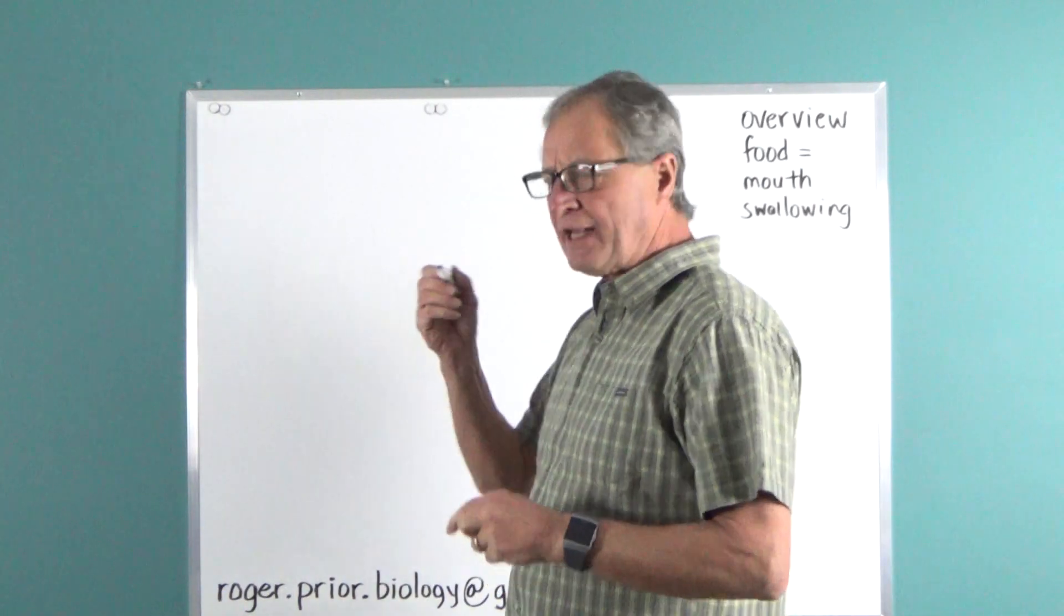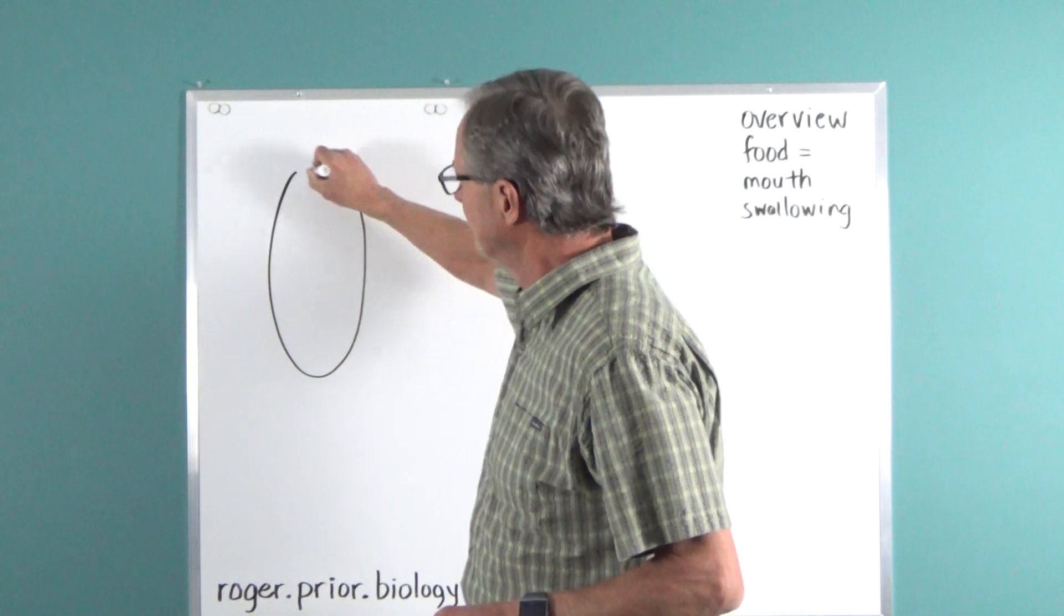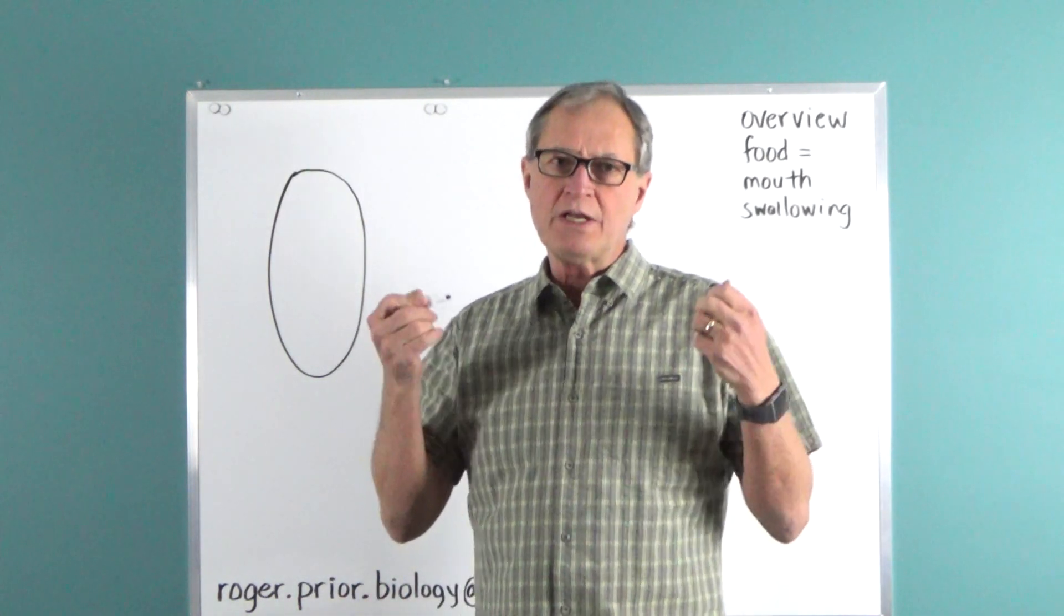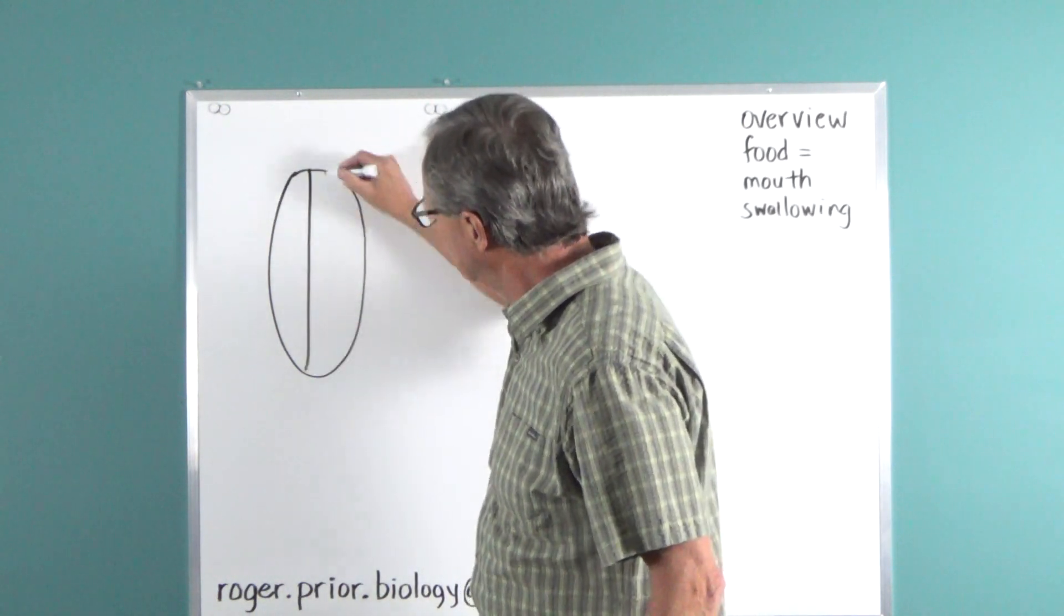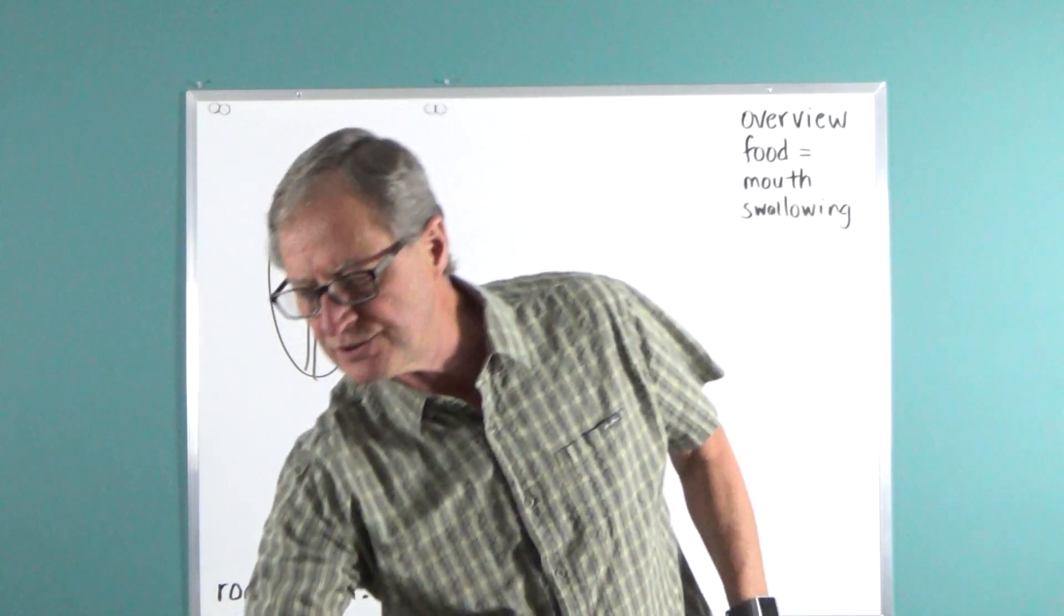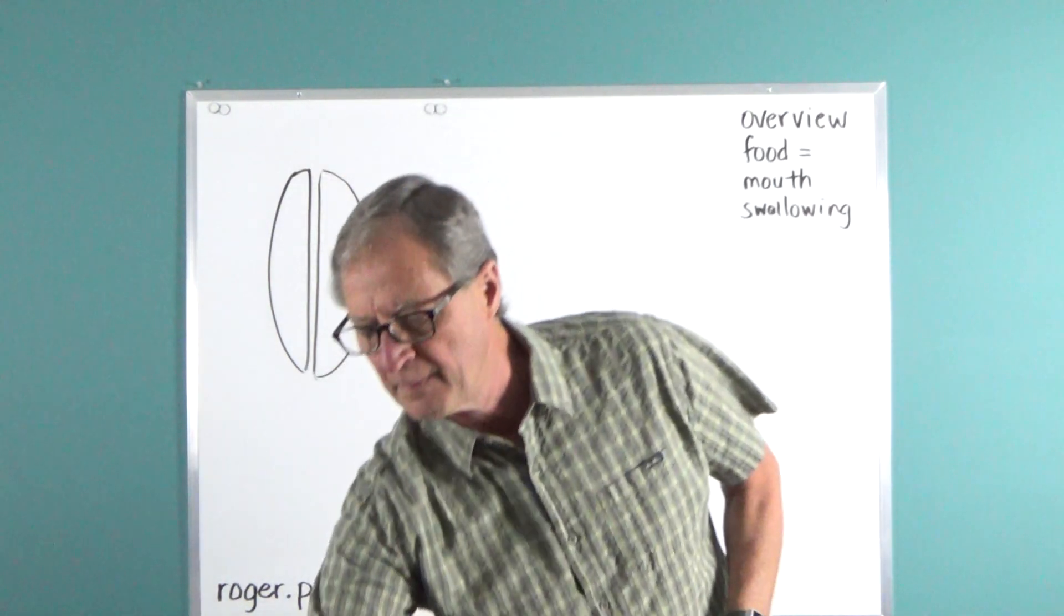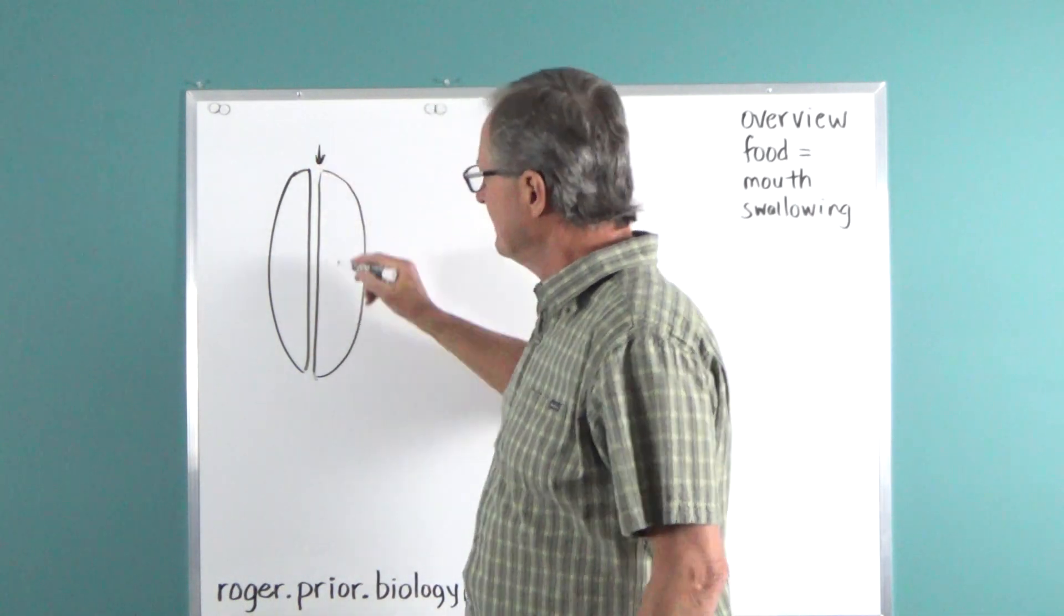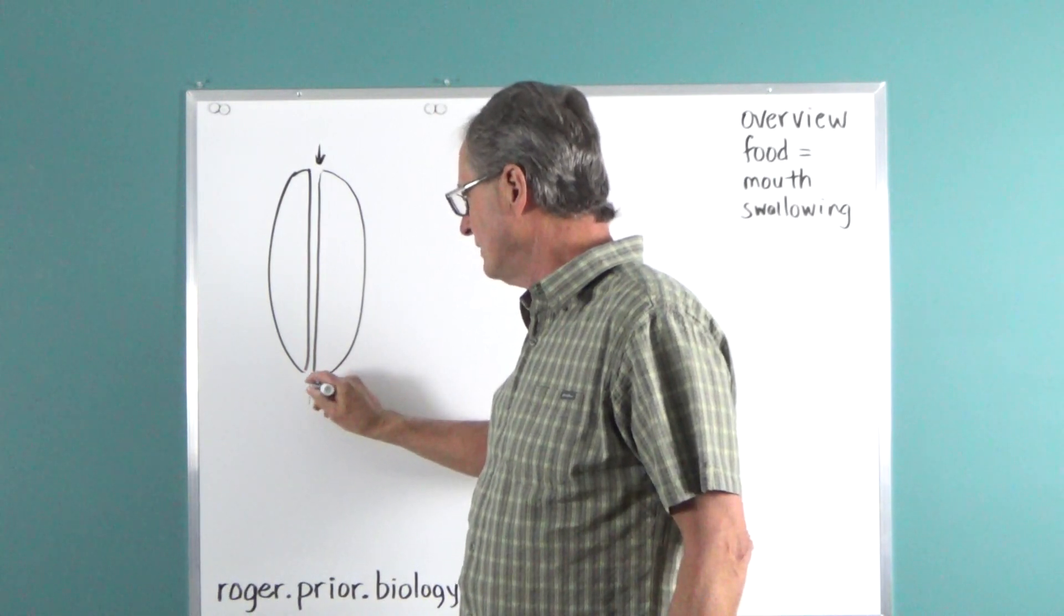I'd like you to think of the digestive system in this fashion. If this represents the body, the digestive system is really just a tube that runs through the body, open on both ends. The mouth is where we put the food. The digestive system treats the food, and what it can't use comes out the anus.